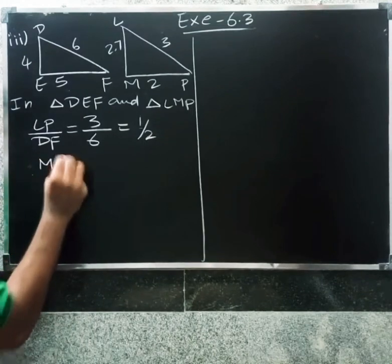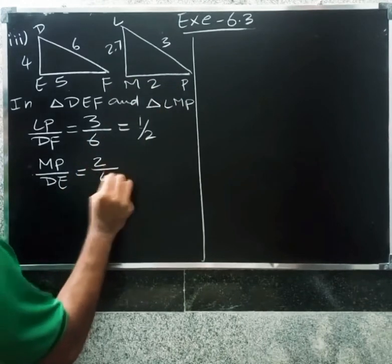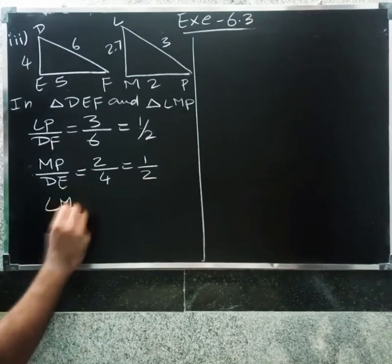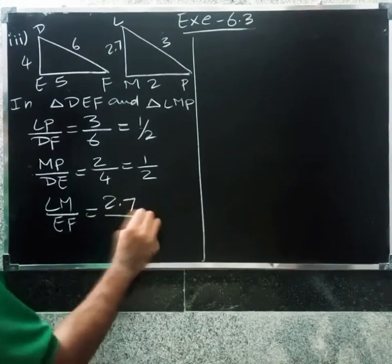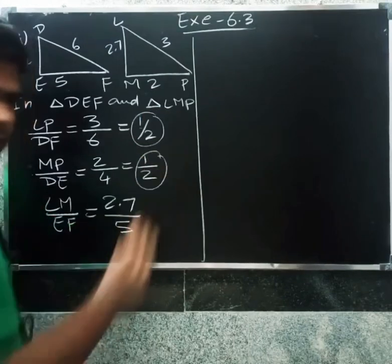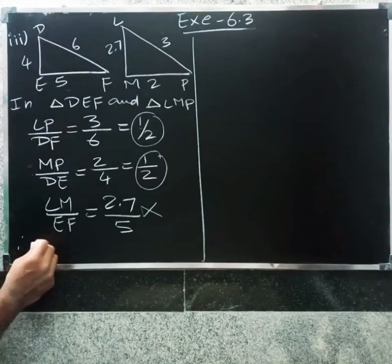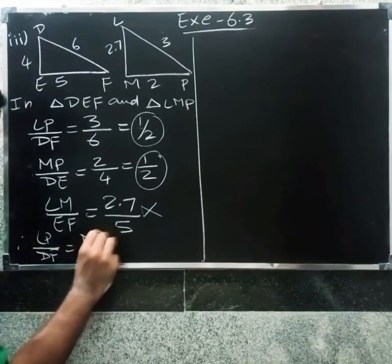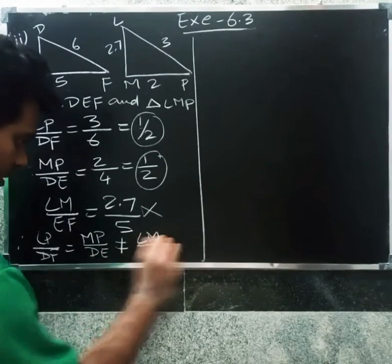Next, MP by DE: MP value 2, DE value 1, ratio 1 by 2. The third value is 2.7 but the corresponding value is 5. So LP by DF equals 1 by 2, MP by DE equals 1 by 2, but LM by DF is not equal. Therefore the ratios are not all equal.